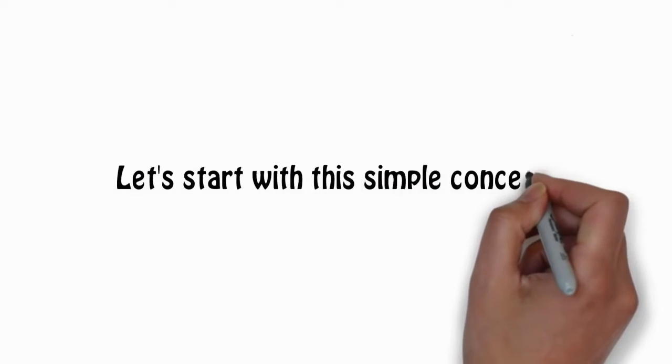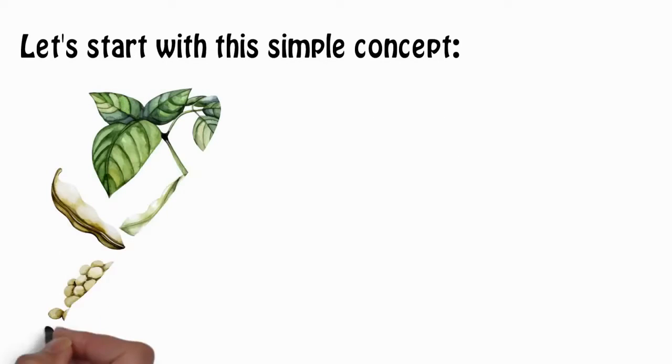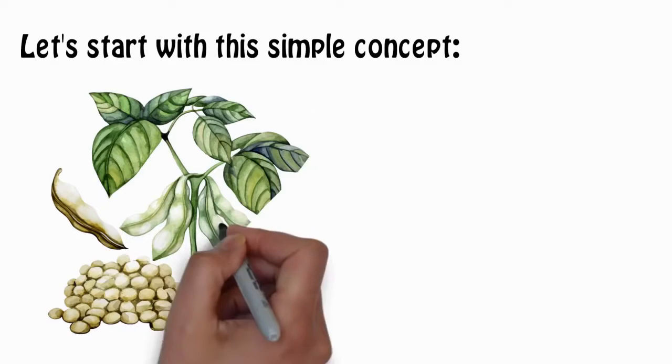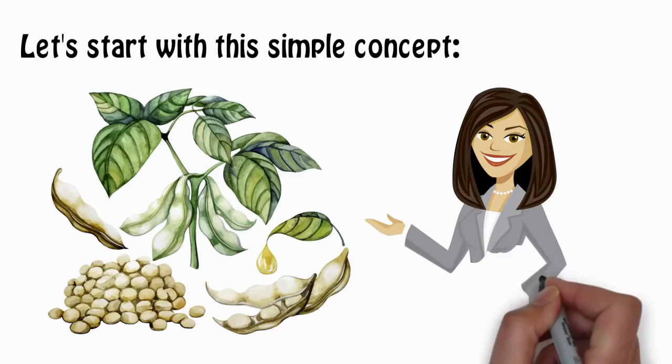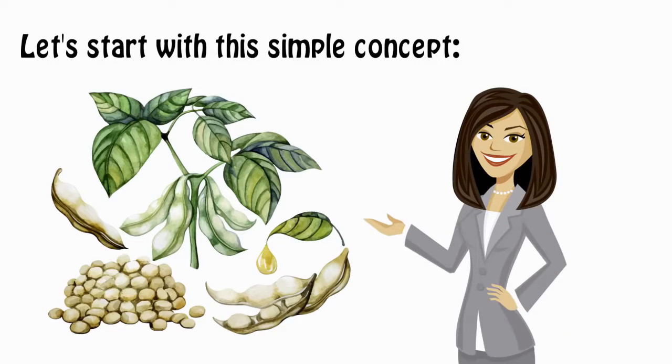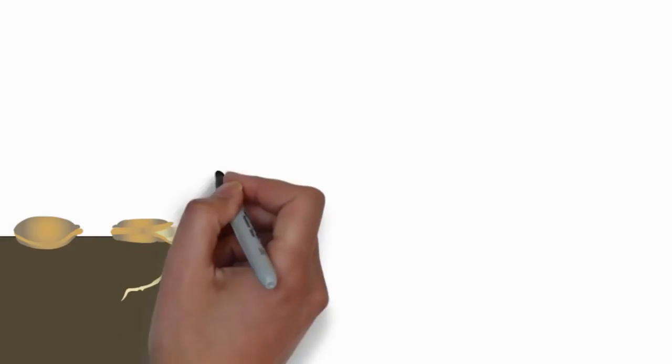Let's start with this simple concept. Nature has designed most seeds to stay dormant for a fairly short time before they will need to germinate and grow again. Usually, this is about a year from the end of one growing season to the beginning of the next.